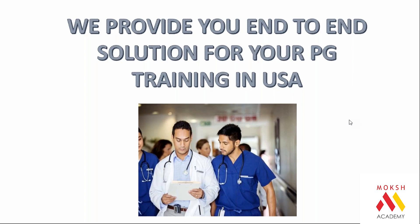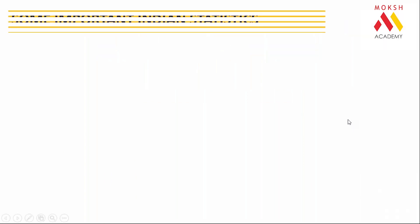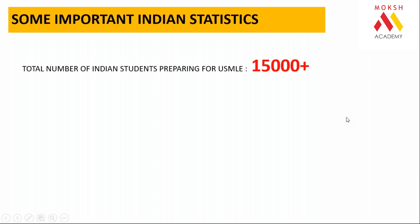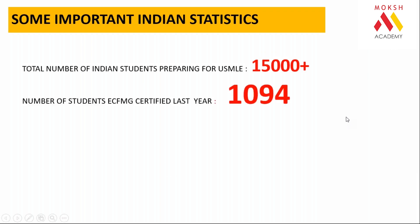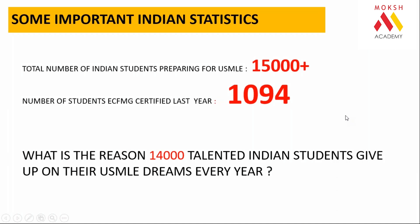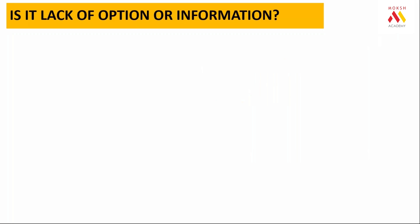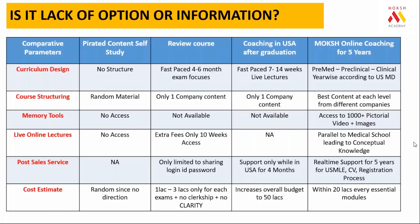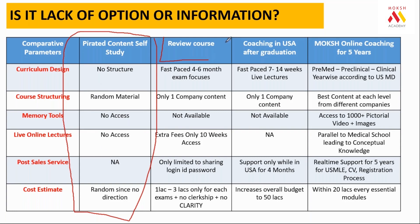We help students with the entire preparation for USMLE, clinical rotations, and residency match at different levels. But the reality is: 15,000 people prepare for USMLE in India, but last year only 1,094 were matched. Why did 14,000 talented Indian students not succeed? It's not a lack of information. Unfortunately, in India, people rely on WhatsApp and Telegram groups where success rate among group members is as low as one out of 256.